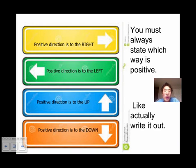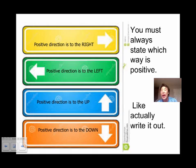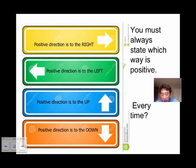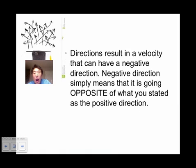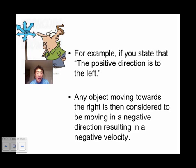When solving problems, you must always state which way is positive. For example: yellow — positive is right; green — positive is left; blue — positive direction is up; orange — positive direction is down. You must write that out when answering a problem. Negative direction simply means you're going opposite of what you stated as positive. If you state positive direction is to the left, anything moving to the right is considered negative.